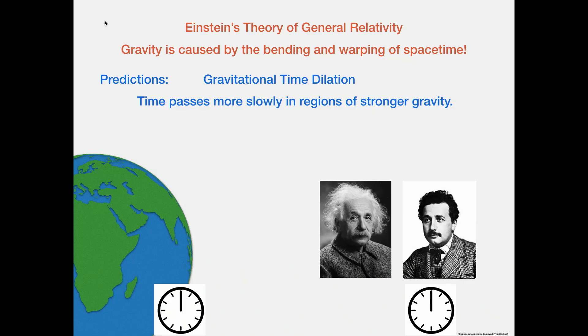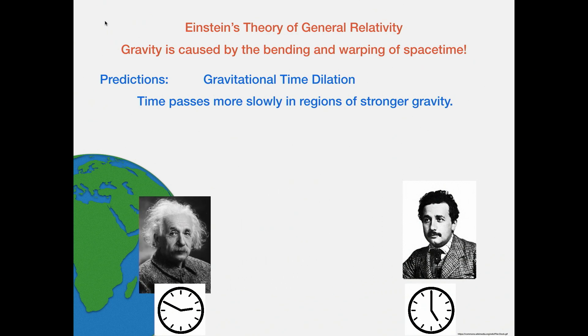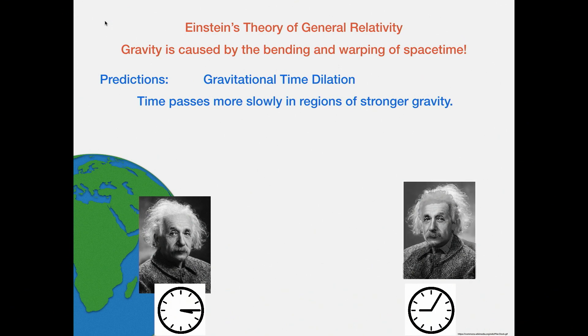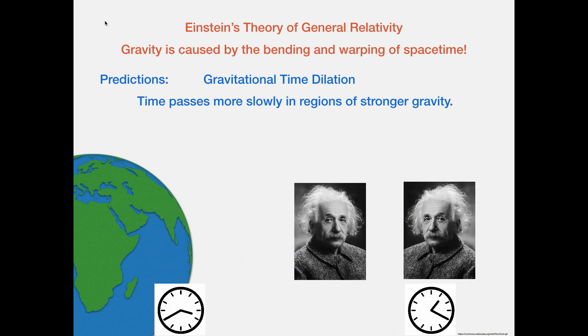General relativity also predicts gravitational time dilation: time passes more slowly in regions of stronger gravity. Here we have twin Einsteins, though one is a lot older because he was tricked. The older Einstein knows that time runs slower near a region of stronger gravity but runs faster far away. So he can go towards the earth, stay there for some time, wait until the farther Einstein gets older, then go back — and now they're even.